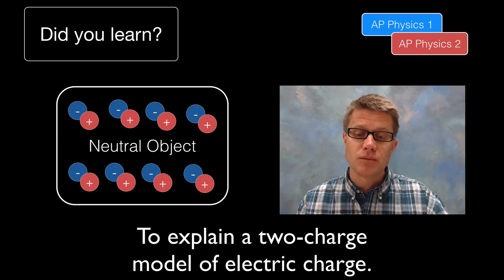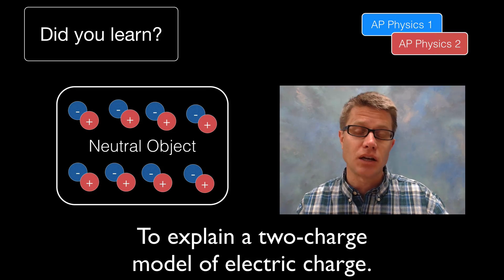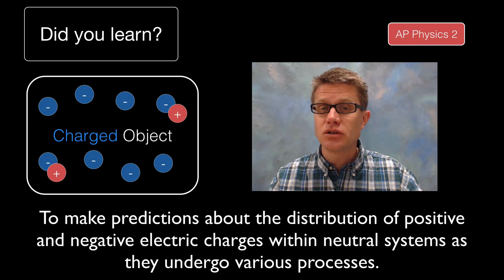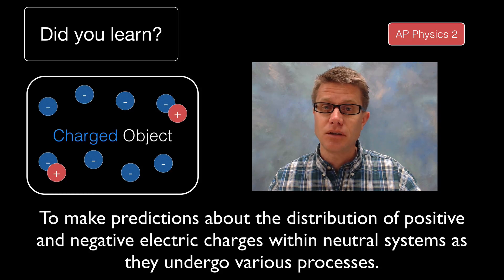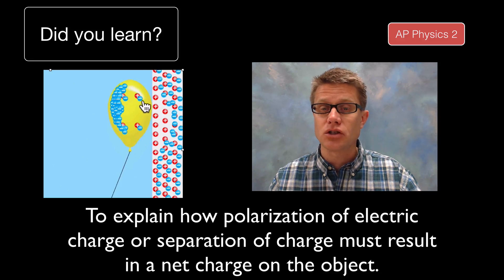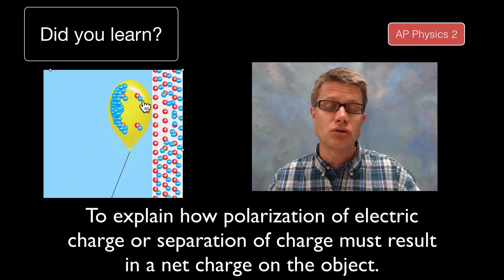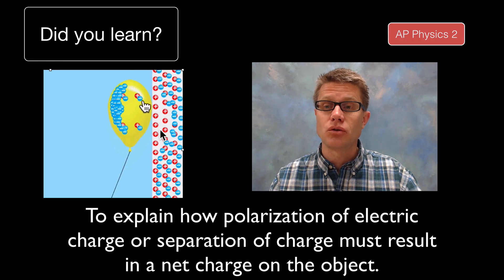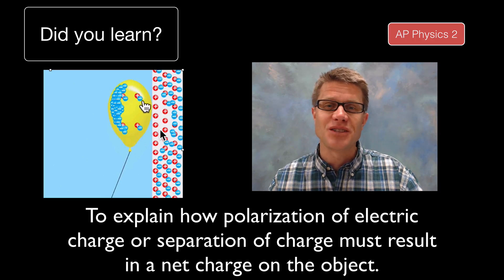So did you learn the following? To explain a two-charge model of electric charge — if it is a neutral object we are going to have equal amounts of each of those two different charges. Did you learn that the distribution of those charges tells us if the object is going to be positively or negatively charged? And finally, did you learn to explain how the polarization of electric charge — the separation of that charge in a neutral object — can lead to an attraction, such as between a charged balloon and what used to be a neutral wall? I hope so, and I hope that was helpful.